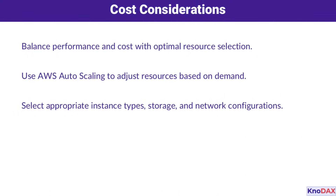Of course, cost plays a huge role in resource placement. AWS offers tools like auto-scaling to adjust resources based on demand, ensuring you pay only for what you use. Choosing the right instance types, storage, and network configurations can balance performance and cost, making your architecture both efficient and economical.